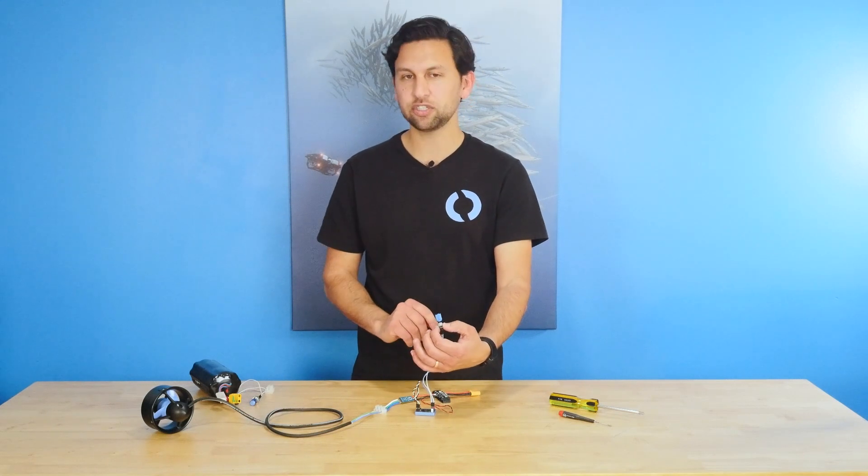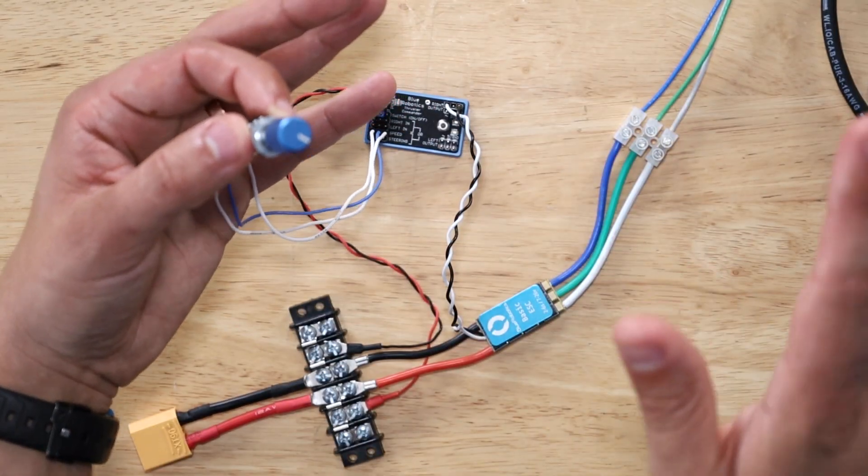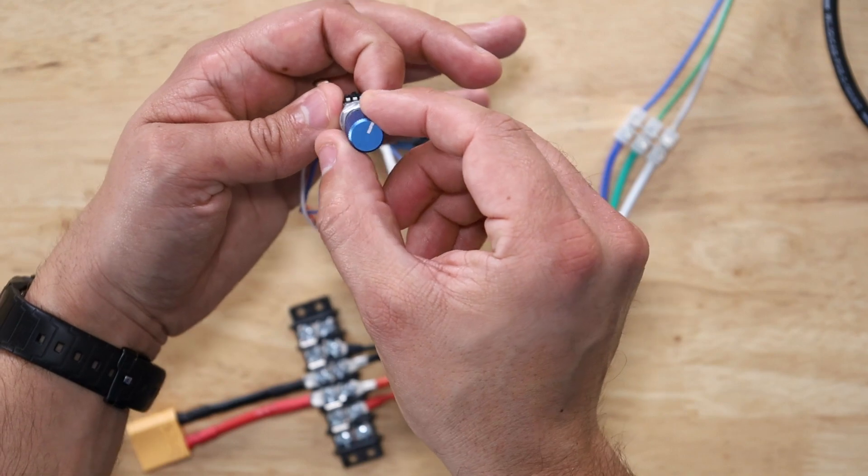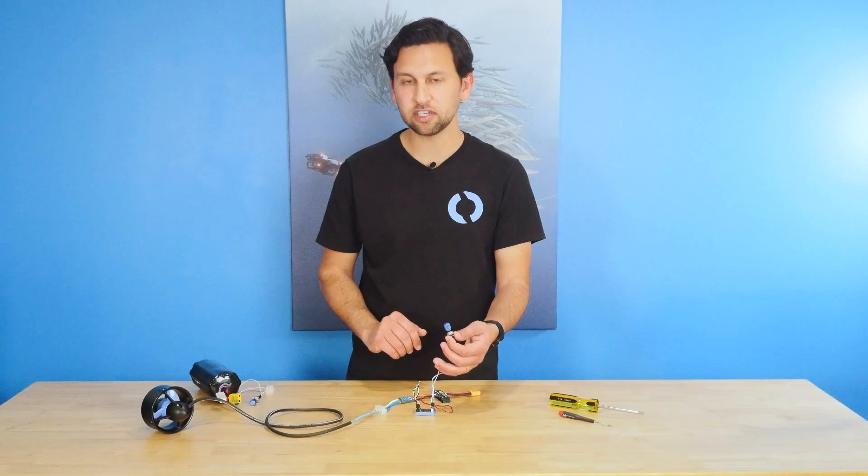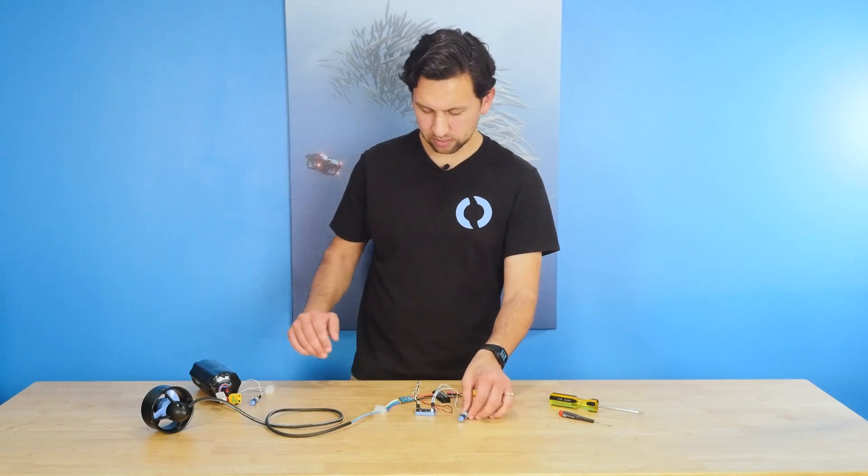If I power up the system with that potentiometer off to one side, either left or right, it's not going to initialize the thruster and it's not going to spin until we return the potentiometer back to the centered position. So with that, let's plug in a battery and see if it works.